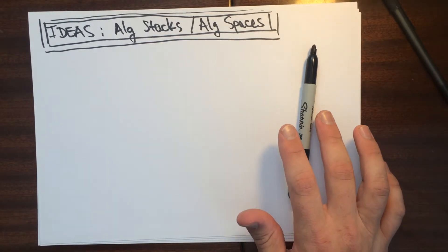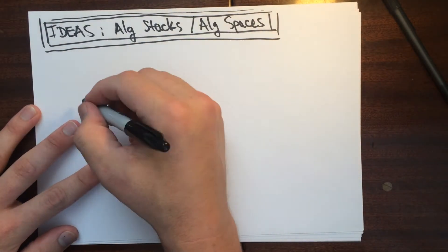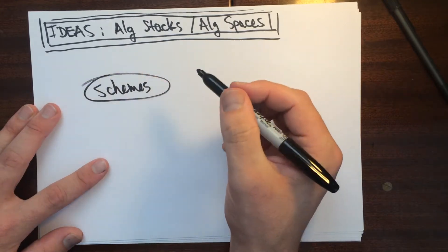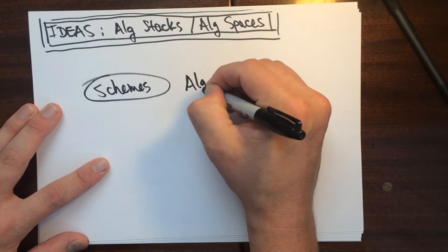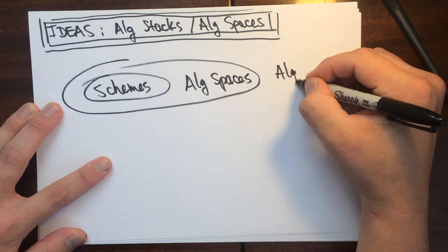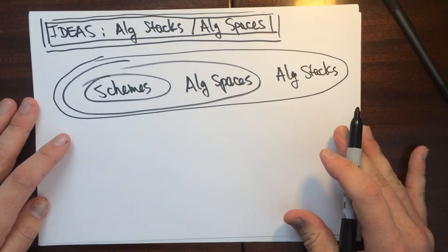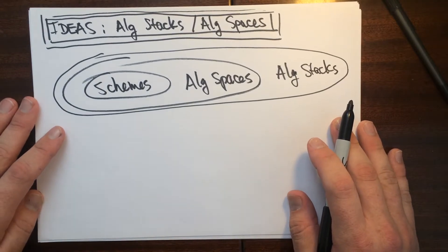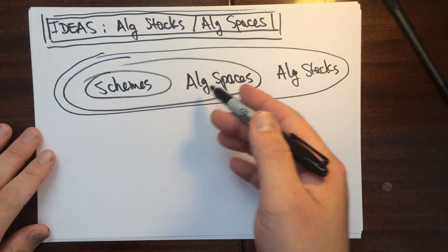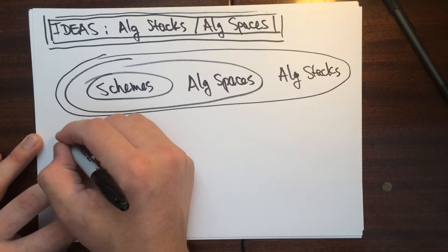This video is about algebraic stacks and algebraic spaces — essentially the ideas behind them. So let me tell you what we're dealing with here. We have schemes, and then outside of schemes there are algebraic spaces, and then outside of that there are algebraic stacks. I've made a video on stacks, but those stacks are not necessarily geometric objects — they were just the fibred functors. I'm going to talk about these two things and how to arrive at the idea behind them. So first, let's talk about algebraic spaces.